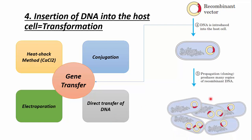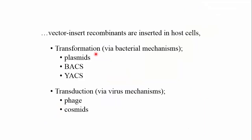Next, we propagate our recombinant DNA into E. coli cells, and they produce thousands to millions of copies of recombinant DNA. Transformation carried out by bacterial mechanisms uses plasmid, BAC, and YAC as vectors, while transformation carried out by viral mechanisms — called transduction — uses phages and cosmids.